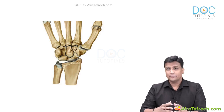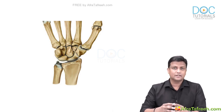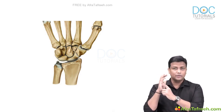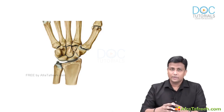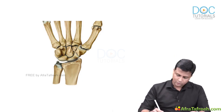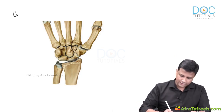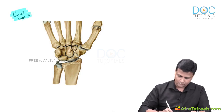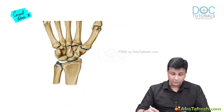Welcome back. The next topic we are going to learn in upper limb is about the carpal bones and the carpal tunnel formation. I'll tell you about the carpal bones and all the important points to remember, and then later on we are going to study about the carpal tunnel. There are totally eight carpal bones, arranged in the form of two rows.